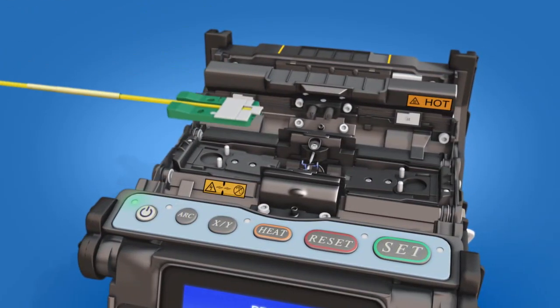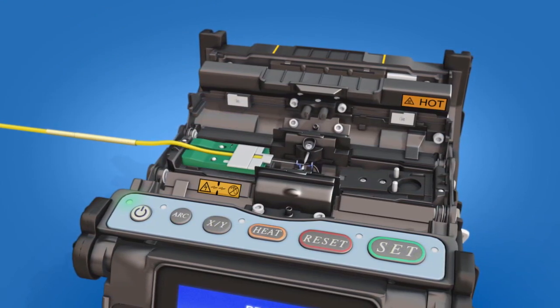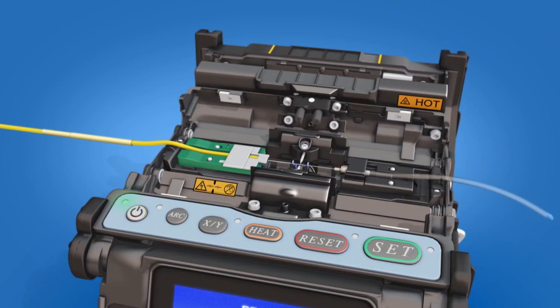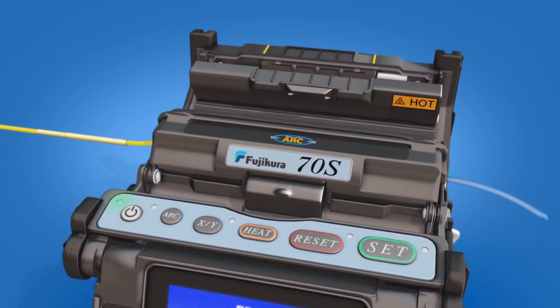Load the fiber holder into the left side of the fusion splicer. Load the ferrule unit into the right side of the fusion splicer and close the wind protector. Splice the fiber to the fuse connect connector.